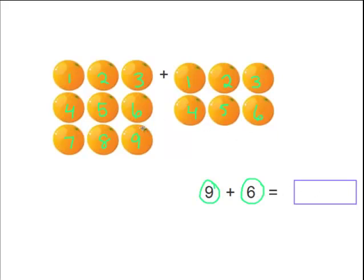Well, let's count forward from 9. So 9, 10, 11, 12, 13, 14, 15. So therefore the answer is 15. Nine plus 6 equals 15. Let's try another one.